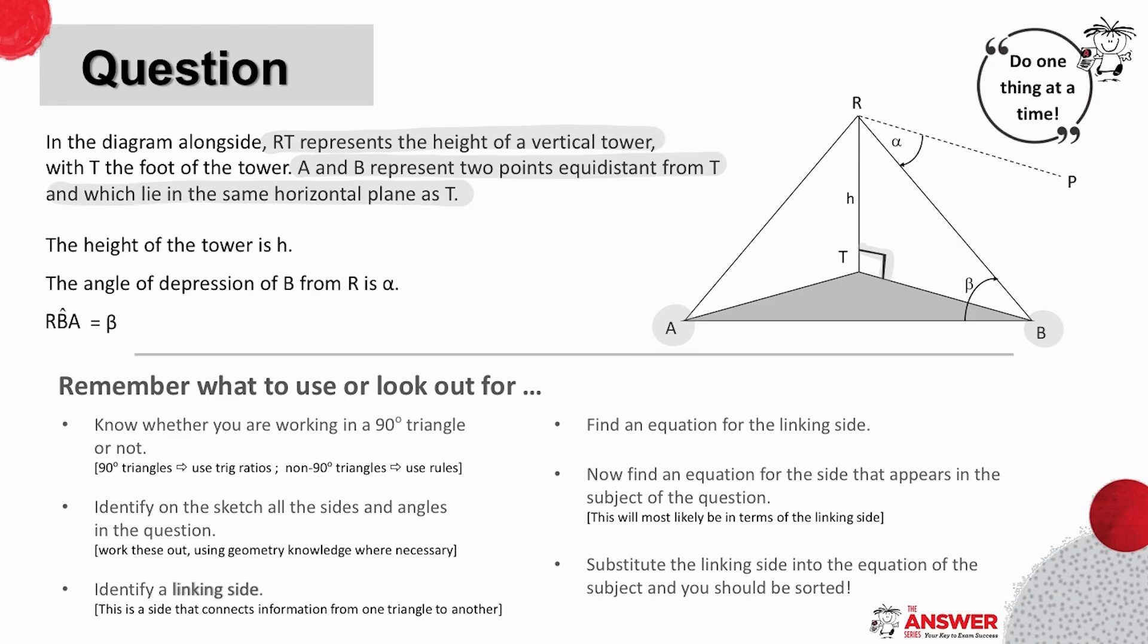We are also given that the angle of depression of B from R is alpha, and that angle RBA is beta. And also that the height of the tower is H.